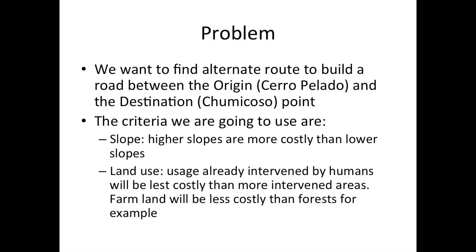What we're going to analyze today: the problem is we want to find an alternate route to build a road between the origin, which is in a town called Cerro Pelado, and the destination, which is in a town called Chumicoso. The criteria we're going to use is slope — higher slopes are more costly than lower slopes — and land use, where intervened land uses are less costly. For example, farmlands will be less costly than forests.